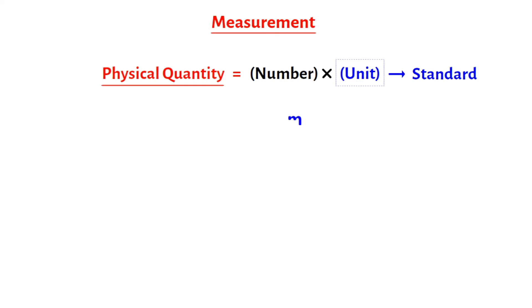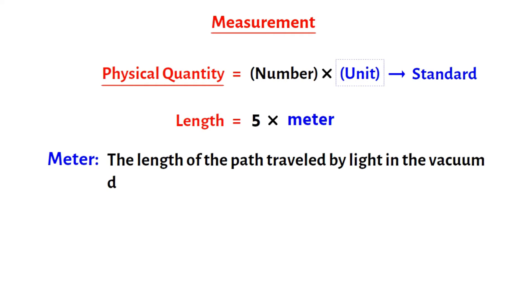For example, the meter is the standard unit of length, and 5 meters is 5 times the standard quantity of the length. Where the meter is the length of the path traveled by light in the vacuum, during a time interval of 1 divided by 299,792,458 of a second.